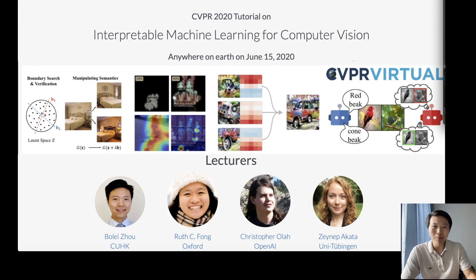Hello everybody, this is Bo Lei, recording video in Hong Kong. Welcome to the CVPR online tutorial on Interpretable Machine Learning for Computer Vision.